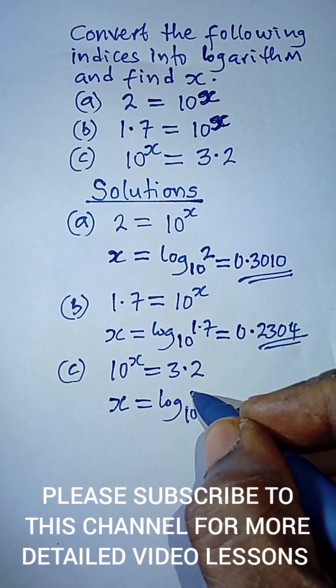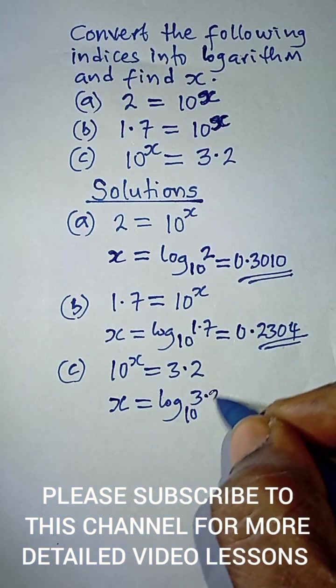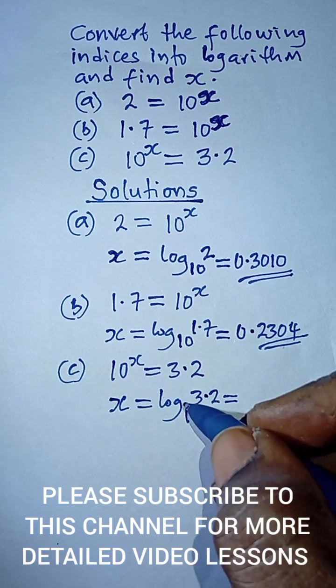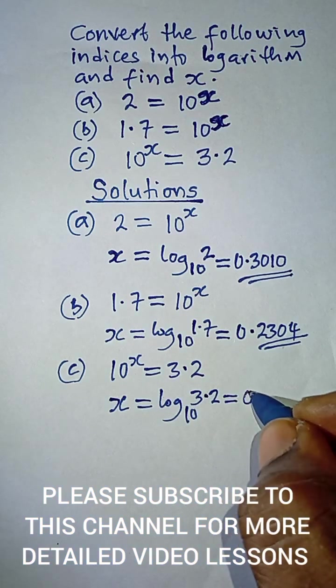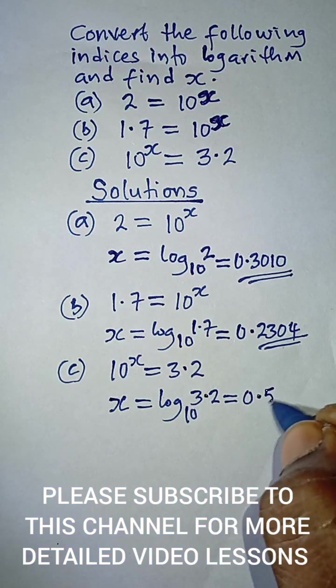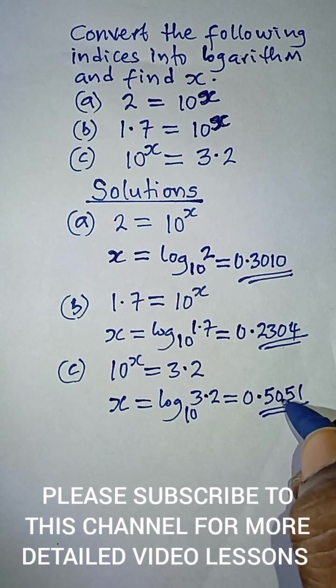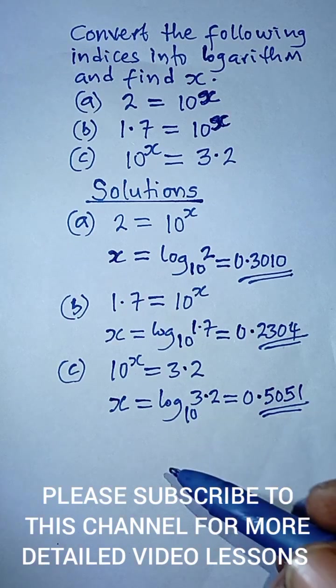And then this final value 3.2. If we check from our calculator, the logarithm of 3.2 is 0.5051, so our x here is 0.5051.